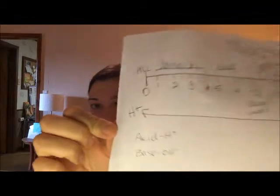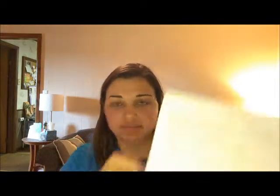H+ stands for hydrogen ions. An acid is measured by its H+ ions, while a base is measured by OH negative ions. On this scale, the higher the number, the more alkaline or basic it is, and the lower the number, the more acidic it is.